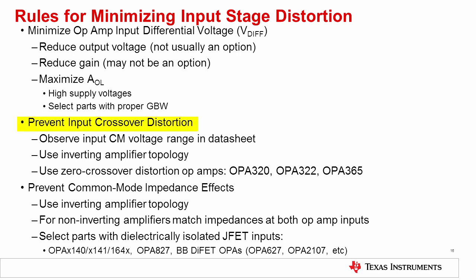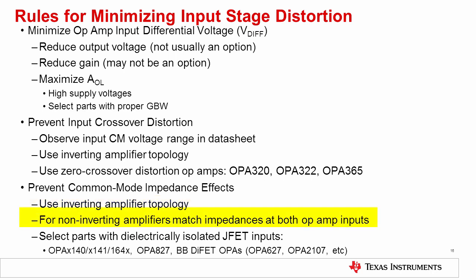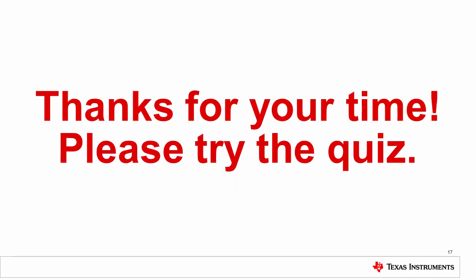Next, prevent input crossover distortion. Observe the common mode voltage range and avoid entering the crossover region if possible. Alternatively, use an inverting amplifier topology, which keeps the op amp's inputs at a fixed common mode voltage, though inverting topologies have lower input impedance. Alternatively, select a zero crossover distortion op amp, which has a charge pump on the input stage to prevent crossover distortion effects. Finally, prevent the effects of common mode input impedance variation. Using the inverting topology keeps the input common mode voltage at a fixed level and avoids these issues. For non-inverting amplifiers, match the impedance of the inverting and non-inverting inputs, or select an op amp with dielectrically isolated JFET inputs. This video explained the sources of input stage distortion and methods for minimizing it. Stay tuned for the next video, which discusses op amp output stage distortion. Thank you for your time. Please try the quiz to check your understanding.